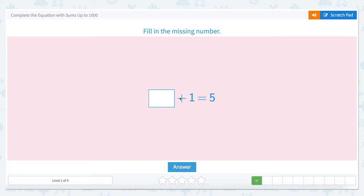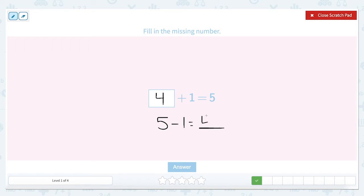The next one says 1 blank plus 1 equals 5. So let's use that scratchpad. And again, we can relate our addition sentence to a subtraction sentence. 5 minus 1 equals something. Well, if I have 5 ones, I take away 1, I'm going to get 4 ones. So let's see if 4 plus 1 equals 5. It does.